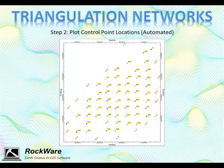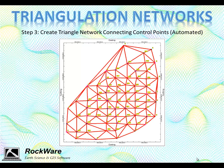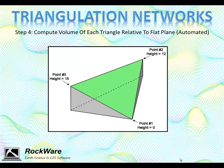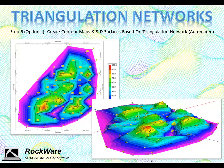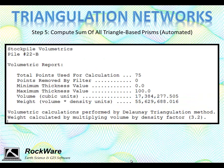We typically start by plotting the control points to make sure they're in the right place. For example, if the map is rotated 90 degrees, we know that the X and Y columns have been misselected. Next, the program constructs a network of triangles connecting these control points with their closest neighbors. The volume of the prisms defined by each triangle and the stockpile base is then computed and totaled for the entire network. The triangles may also be color-coded to produce contour maps and three-dimensional surfaces. The total volume is listed in a report that includes an option for entering a density conversion factor so volumes may be converted to mass units.